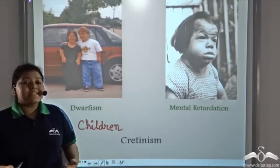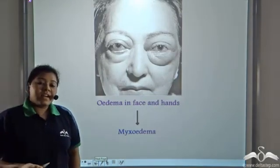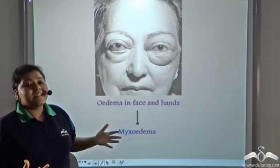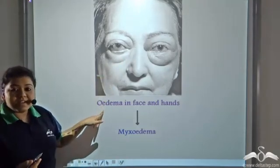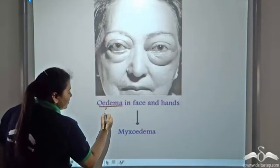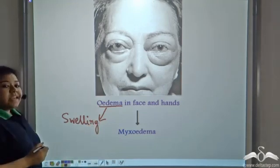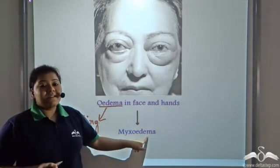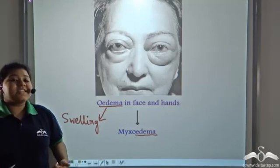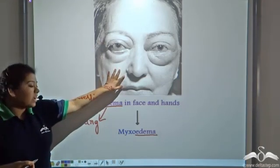Less thyroxine secretion does not only affect children. It can also affect adults. In adults, the symptoms are sluggishness, a lot of fatigue, and also edema in the face, hands, and eyes. Edema means swelling or puffiness in the face and in the hands. The disease caused in adults is known as myxedema, which comes from the word edema. So less secretion of thyroxine causes cretinism in children and myxedema in adults.